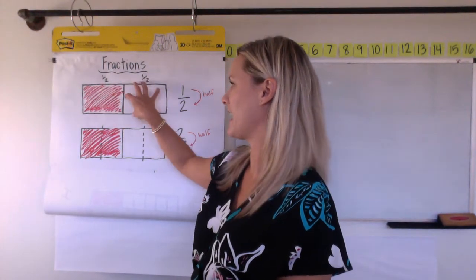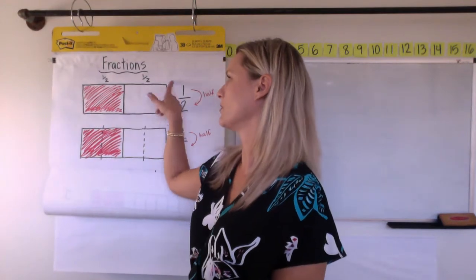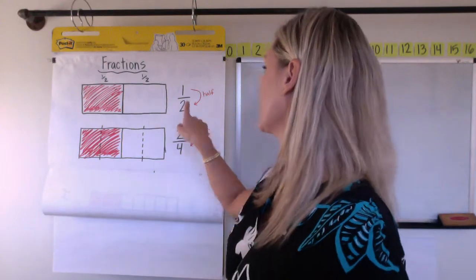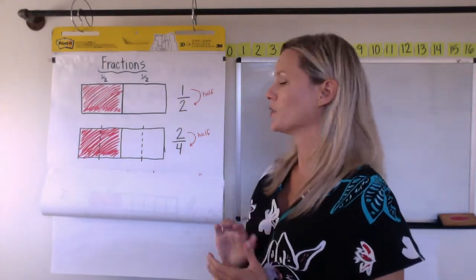We have a half and a half here. Of course, this rectangle represents one whole and it's broken into two pieces. One piece is shaded. So one piece out of two are shaded.